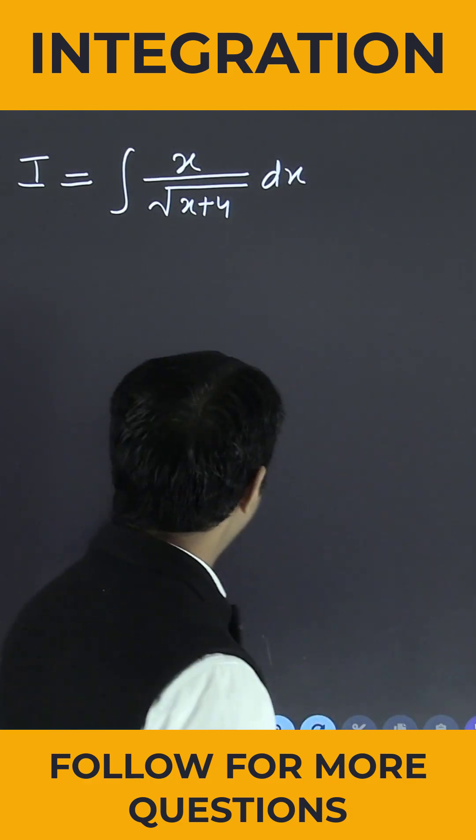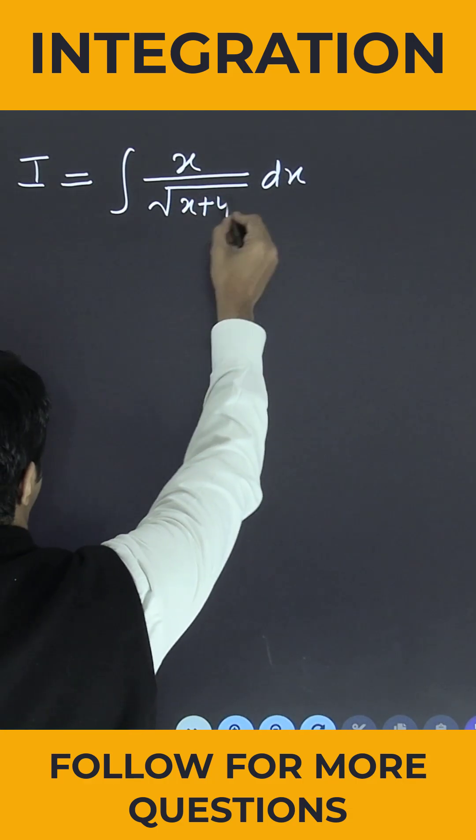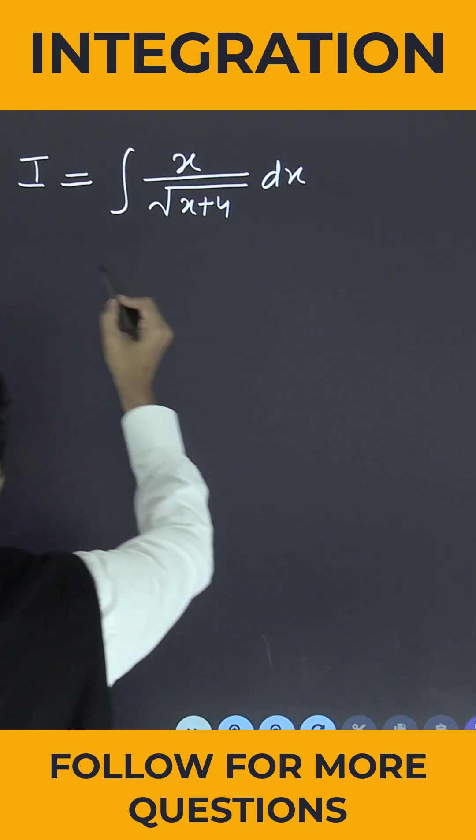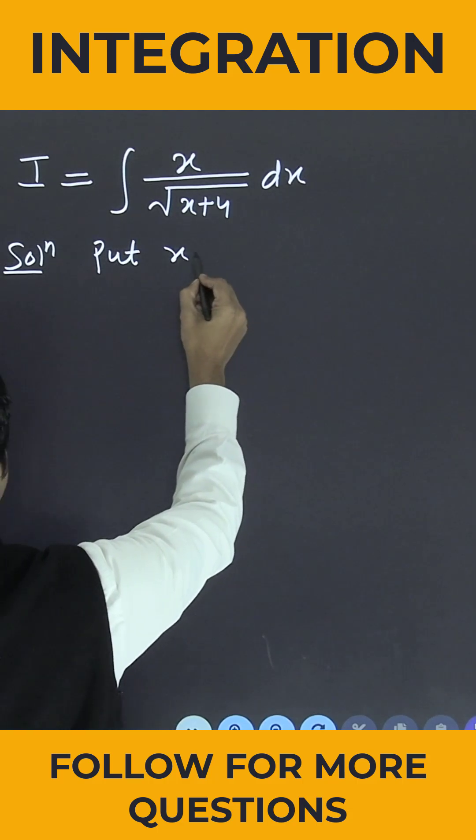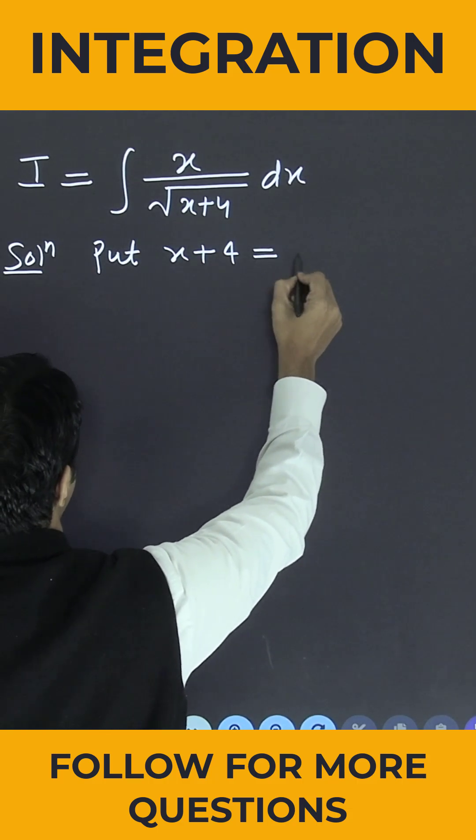One integration is given to us: integral of x divided by root x plus 4 dx. Let me simply put x plus 4 equals t.